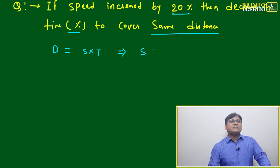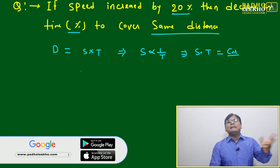If distance is constant, speed will be inversely proportional to time. When two quantities are inversely proportional, we can write S × T = constant, which means S × T = D, where D is constant.